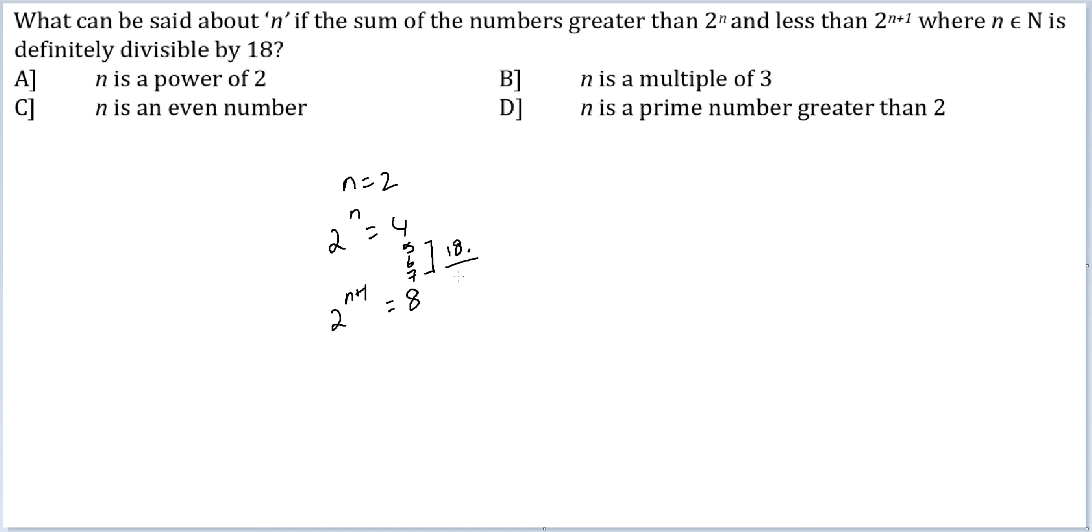If n equal to 2, these conditions are getting satisfied, you can straight away rule out option B and option D from the running. n is not a multiple of 3, n is not a prime number greater than 2. So we've got A and C. One of these two will be the correct answer.